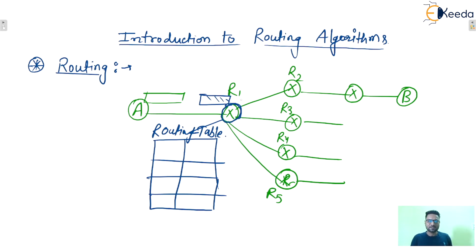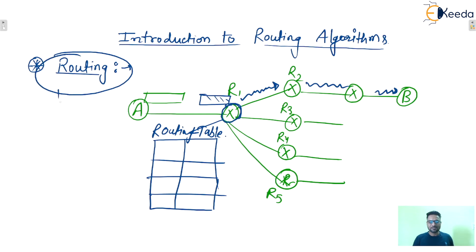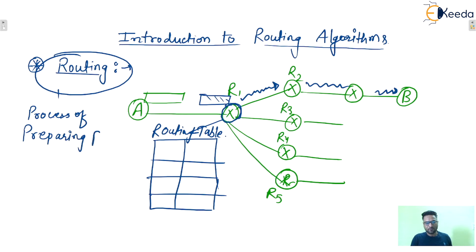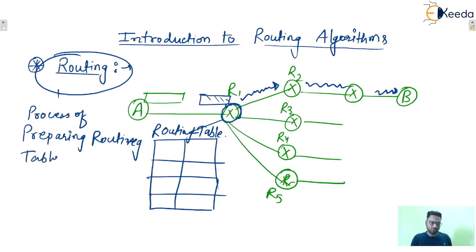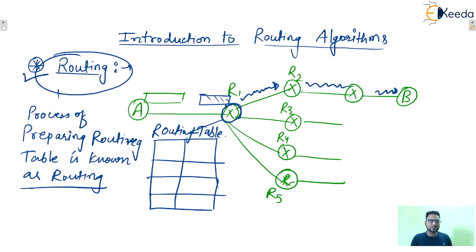With the help of this routing table, we can say that this packet will be forwarded to R2, and finally to station B at the destination. Now, what is the meaning of routing? The process of preparing this routing table is known as routing. So you can write down: process of preparing routing table is known as routing. That's all about the term routing.